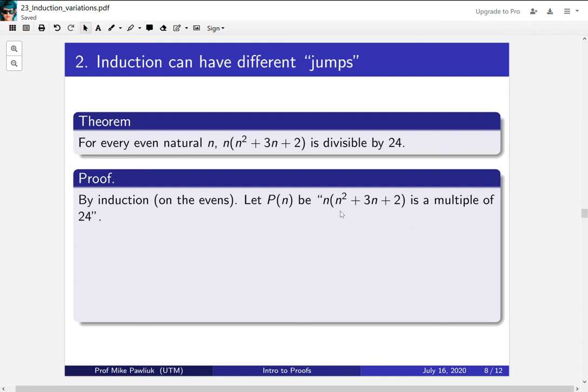As a caution, sometimes people are tempted to say that this thing right here is the statement p of n, but this thing right here is just an expression. It's like saying 7, or 7 squared, or 7 times n. That's not a statement. You have to assert something about that expression, and we are asserting that this expression is a multiple of 24. That's something that can be true or false.